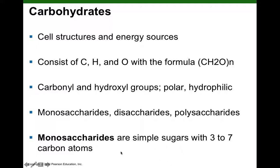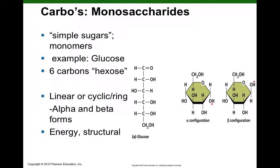We'll start with the simplest carbohydrates — the monosaccharides, sometimes called simple sugars. Monosaccharides can have between three and seven carbon atoms. Glucose is probably the most famous monosaccharide. It has six carbons, so it's called a hexose — hex for six — and the ending '-ose' tells us it's a carbohydrate.